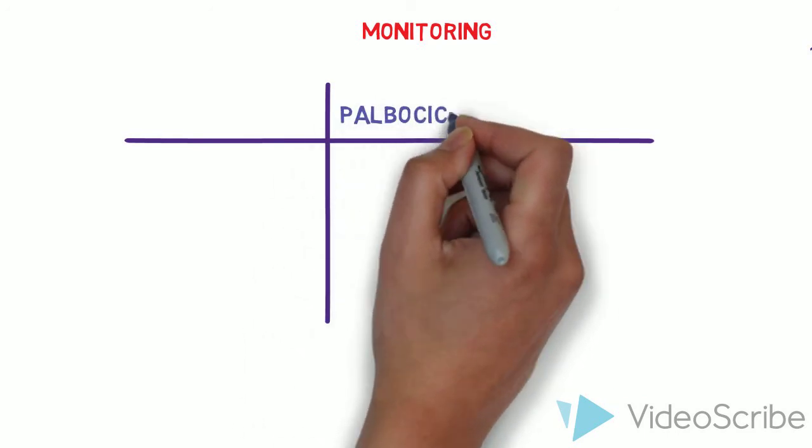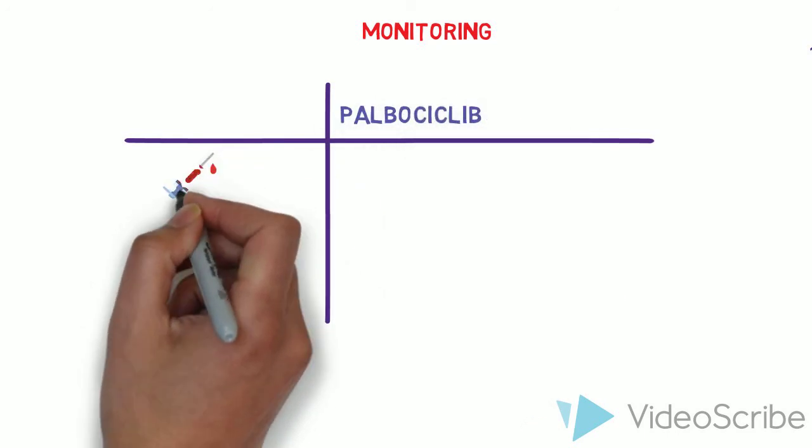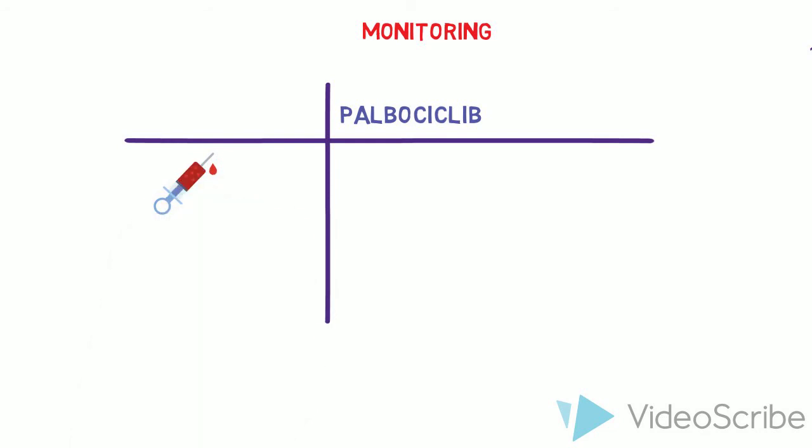Intensive monitoring is required for the first two cycles with full blood counts on day 1 and 15 of the cycle for both ribocyclib and palbocyclib.